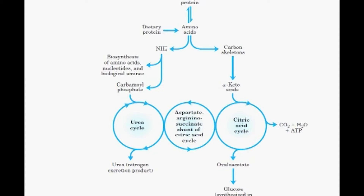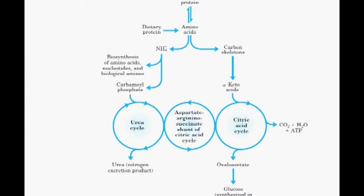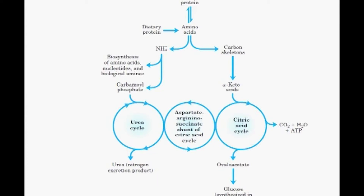The metabolic fate of amino acids: amino acids from dietary proteins can be converted into ammonia and the carbon skeletons of keto acids. Ammonia is converted to urea through the urea cycle and excreted, whereas keto acids go through the citric acid cycle to form energy, or they can be reversed into formation of glucose through the gluconeogenic pathway. There is also an intermediate pathway connecting the citric acid cycle to the urea cycle, where aspartate passes through what is called the argino-succinate shunt.